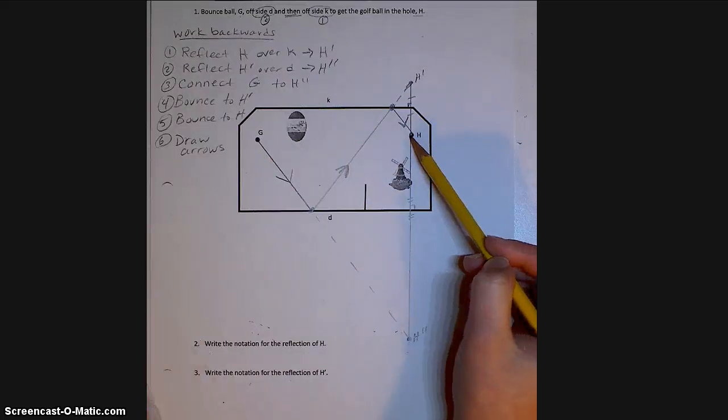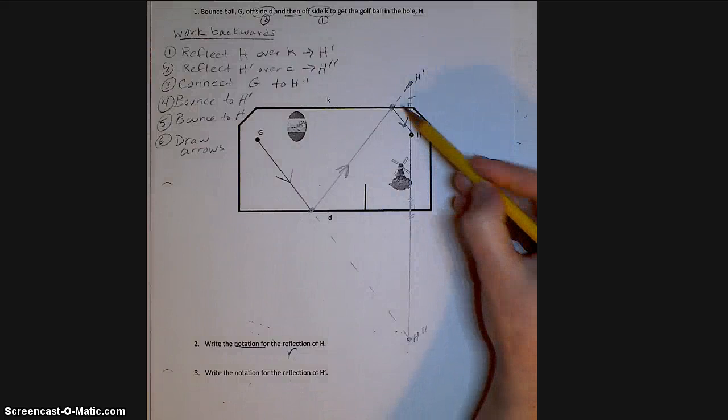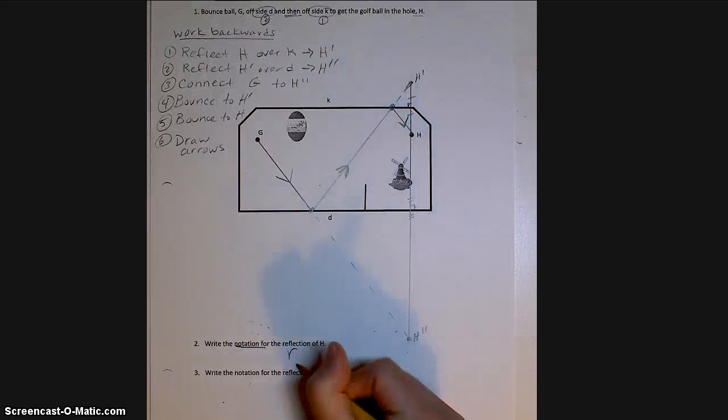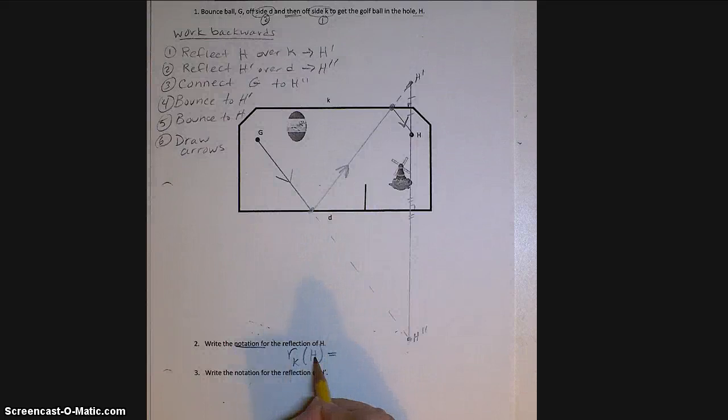Okay, now I want to look at what we just did and write some notation for the reflections. So we know we always use a lowercase r to show our reflection, and then the next letter is the line of reflection. So the first reflection we did was reflect H over the line K. So I'm going to put R sub K of H. So when I reflected H over K, I got H prime.